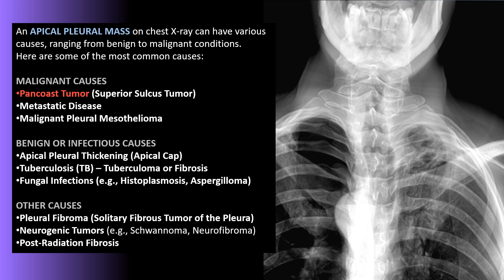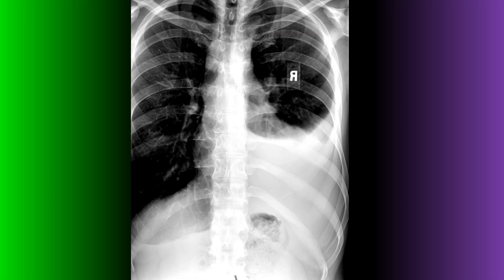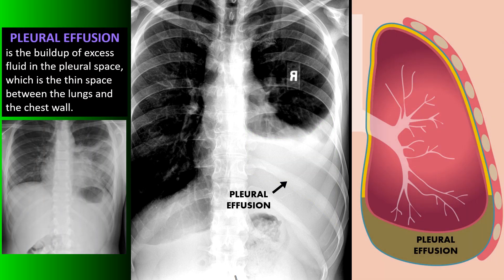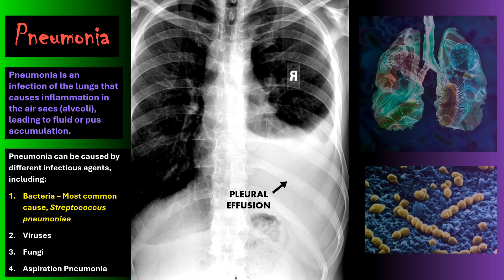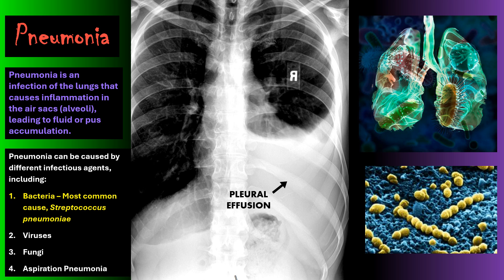On this frontal view of the thoracic spine and chest, you'll notice in the right middle lung field there is a large area of increased density representing a consolidation or pleural effusion. A pleural effusion is a buildup of excess fluid in the pleural space — the thin space between the lungs and the chest wall. One of the most common causes is pneumonia, an infection of the lungs causing inflammation of the air sacs leading to fluid or pus accumulation. The most common cause is bacterial, from the Streptococcus pneumoniae strain.